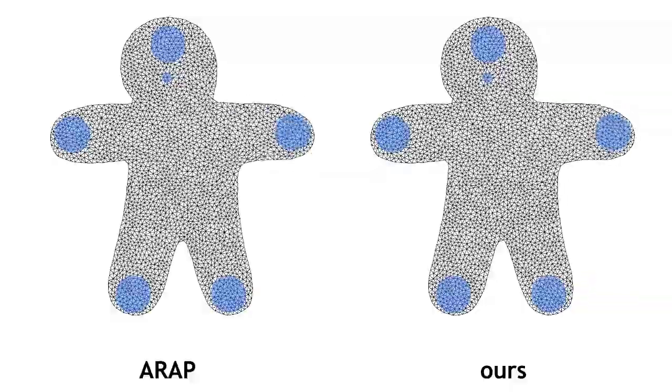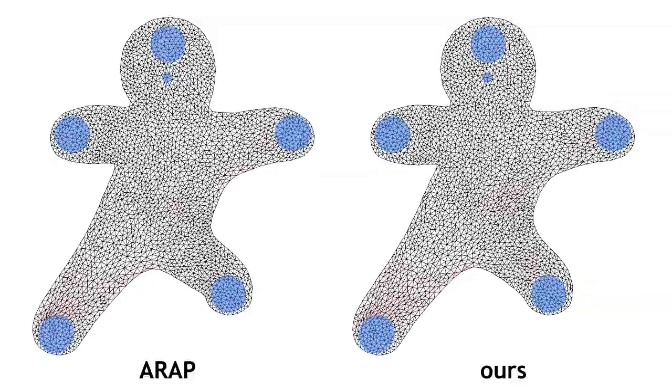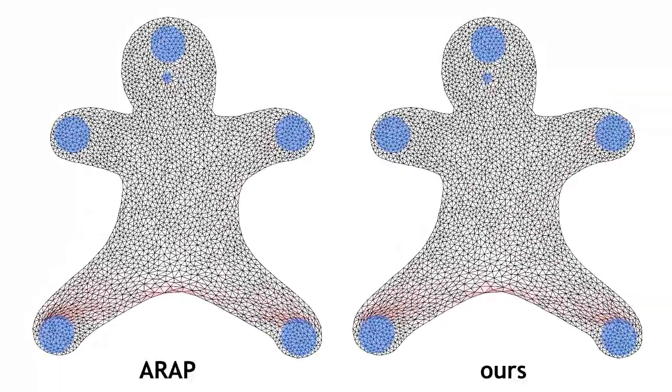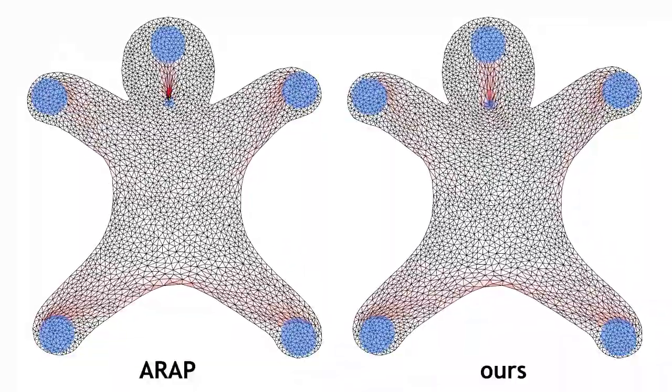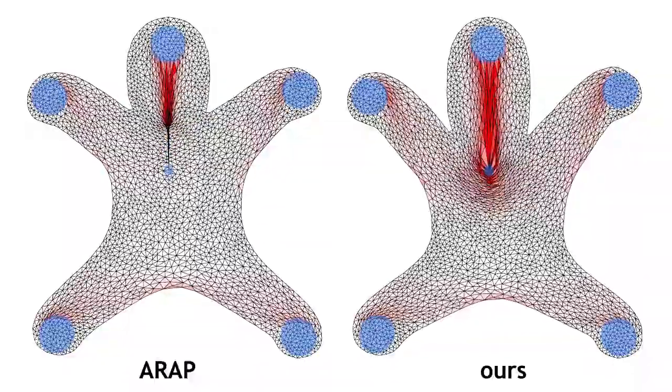We show a simple deformation of a 2D model, minimizing the as rigid as possible energy. The original ARAP formulation works well for moderate deformations, but it suffers from the well-known spike artifact in case of extreme deformation.